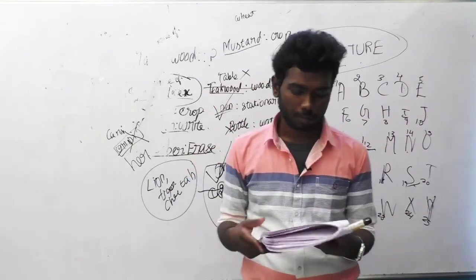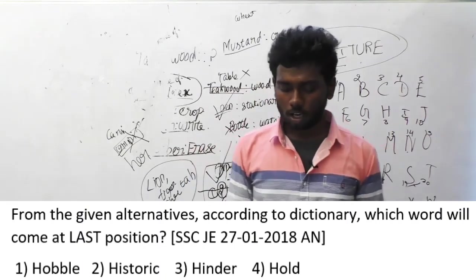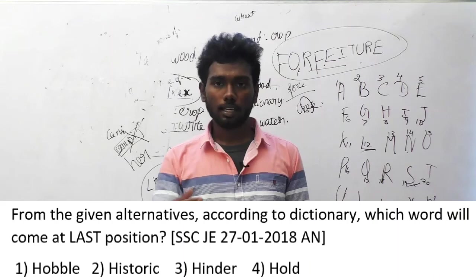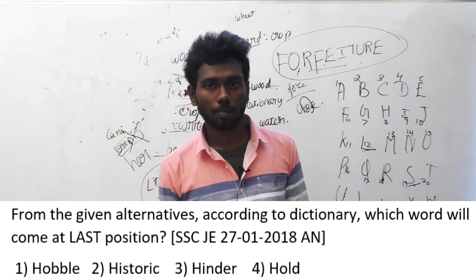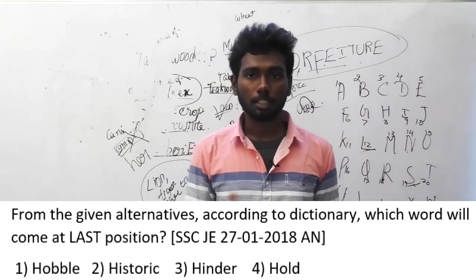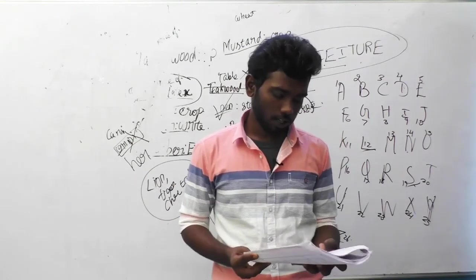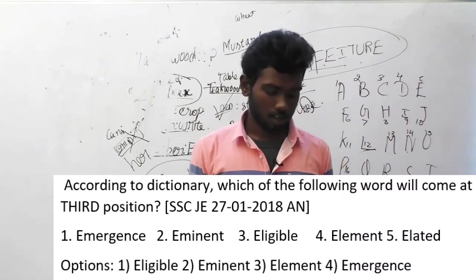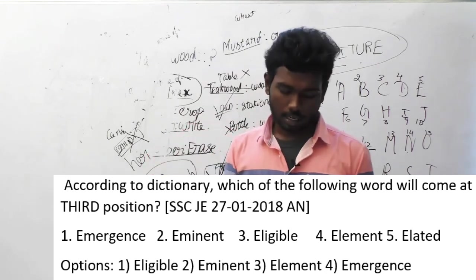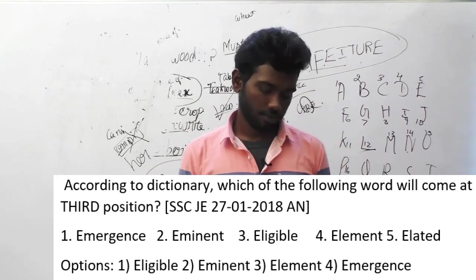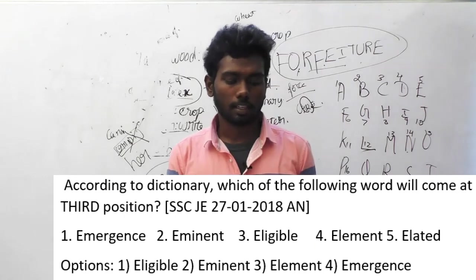Let's move on to question 154. From the given alternatives, according to the dictionary, which word will come at last? Options are hobble, historic, hinder, and hold. Arrange these options in order and find which lies at the last position. The answer is hold. Question 155: which of the following words will come at third position? If you arrange according to dictionary order, eligible comes in the third position. Option A, eligible, is the answer.